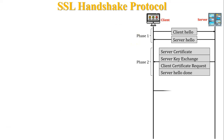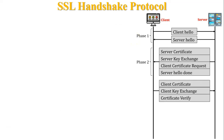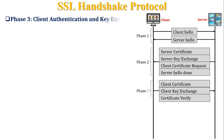After completion of Phase 2, the client sends a response to the server. This client message includes three fields: client certificate, client key exchange, and certificate verified. This message is called Phase 3, which represents client authentication and key exchange.